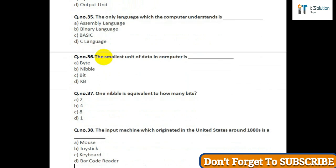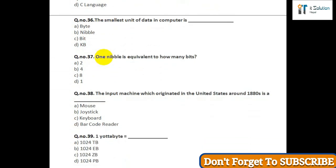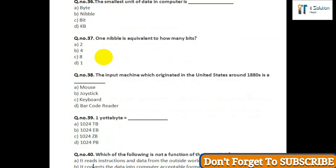Question number thirty-eight: The input machine which originated in the United States around the 1880s is — option A: mouse; option B: joystick; option C: keyboard; option D: barcode reader. Question number thirty-nine: One yottabyte equals — option A: 1024 TB; option B: 1024 EB; option C: 1024 ZB; option D: 1024 PB.